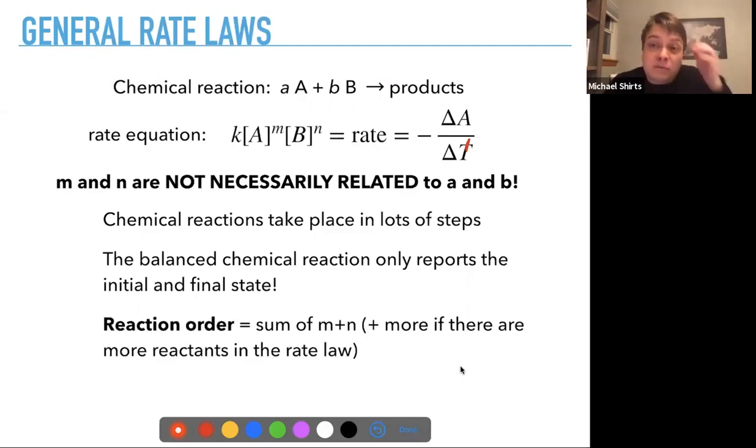So when we talk about a rate law, we classify them in terms of reaction order, and it's just the sum of the integers, m plus n, and if there's more reactants than the coefficient in the rate law of that as well. So that's the reaction order, and so for example, if the rate was equal to some constant times the concentration of A, that would be first order.